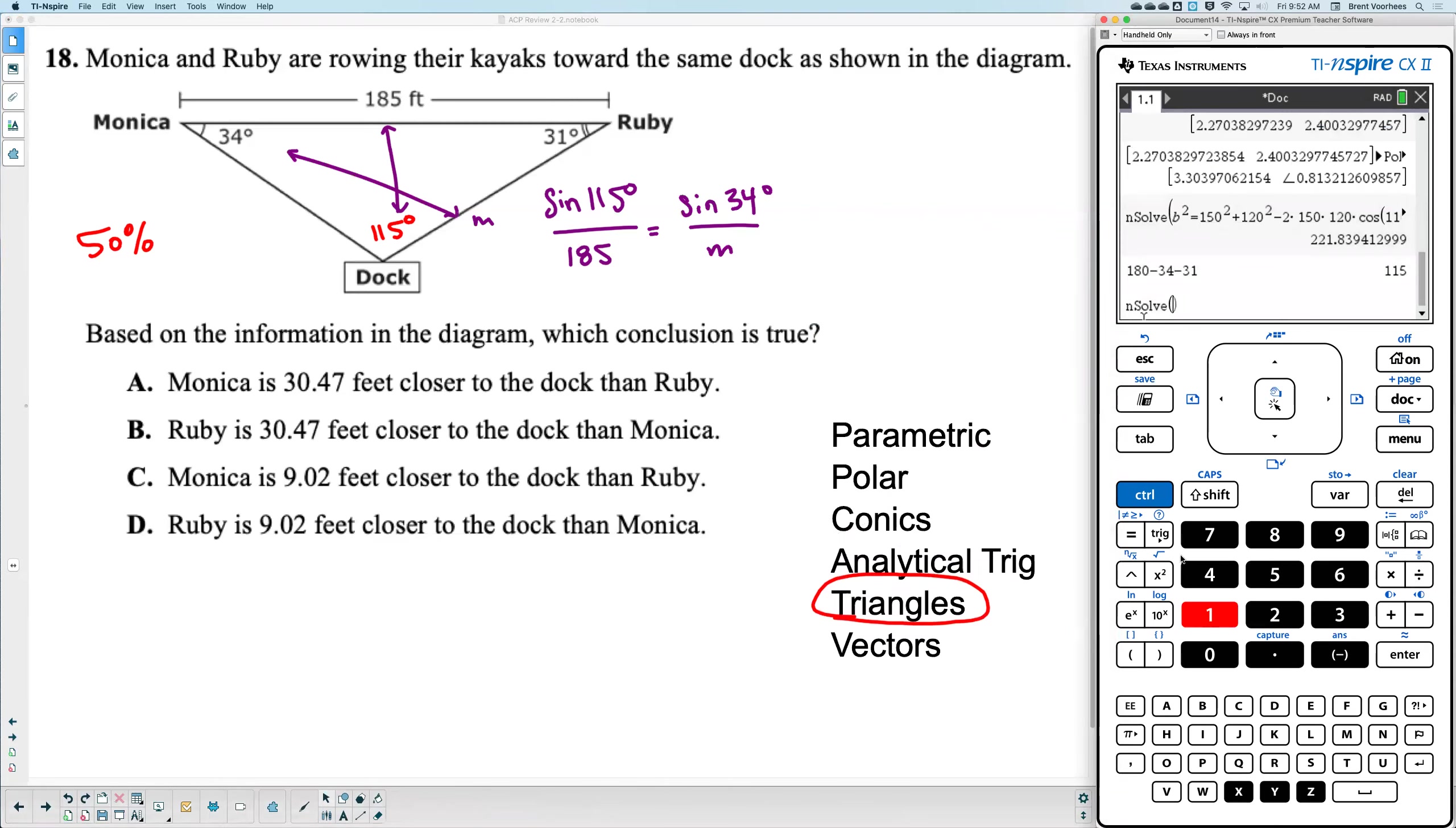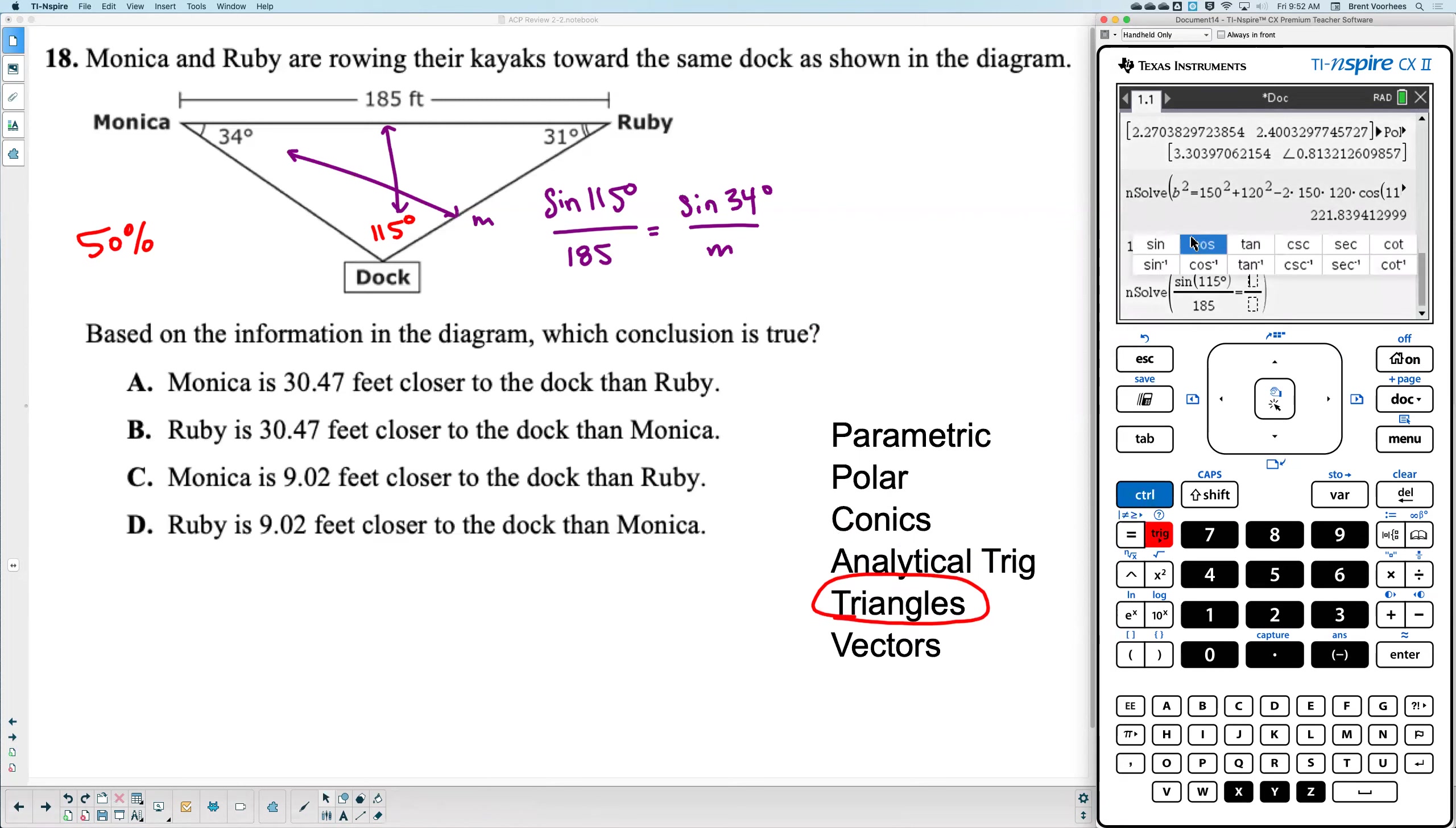Okay, so let's go install this. Menu 3-1. So we have sine of 115 degrees. Don't forget the degree symbol. 115 degrees over 185. It will equal sine of 34 degrees. Again, do not forget the degrees because we're on radians. Let me put that symbol there. Over Monica. I don't know. All right, Jennifer, did you already type it in? Can you type it in for me, please?